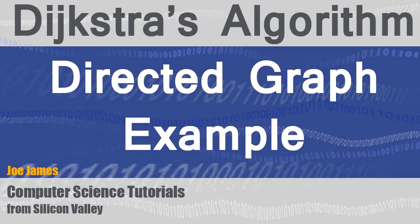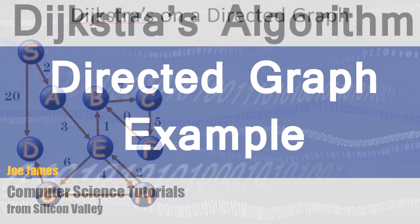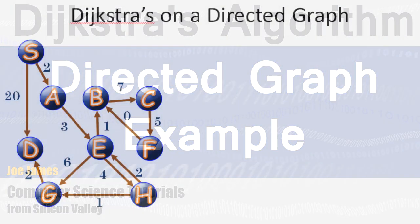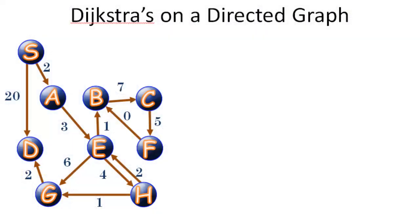Hi, I'm Joe James and in this video we are going to apply Dijkstra's algorithm to this directed graph. As a reminder, Dijkstra's algorithm can be applied to either directed or undirected graphs and it can only be used with non-negative edge weights. So if we have any negative edge weights we cannot apply it. In this case we have one zero edge but no negative edge weights.